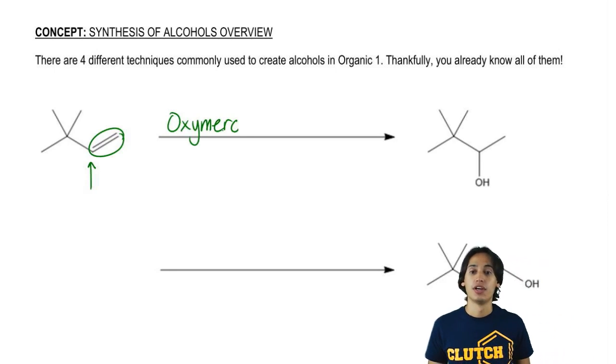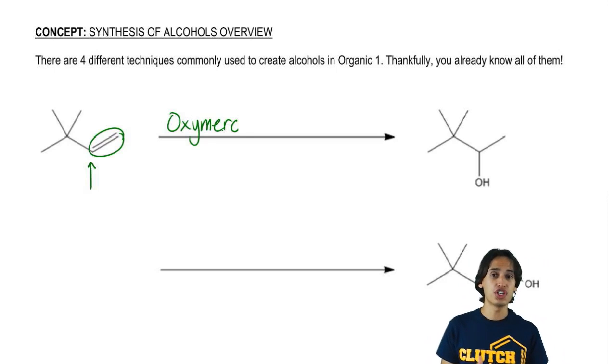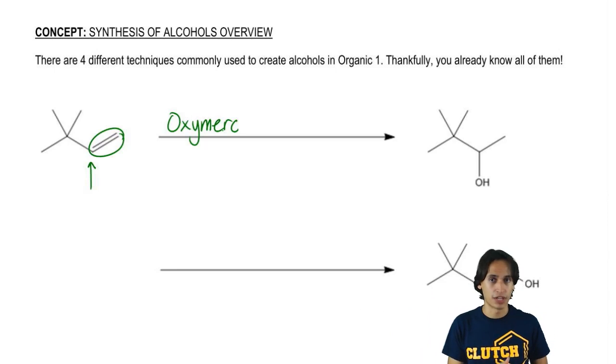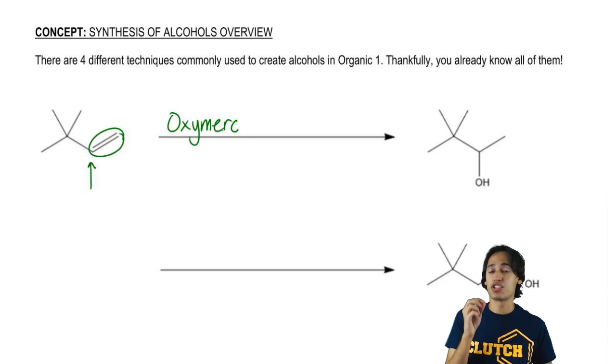Why is that? Because if you remember, oxymercuration is an addition reaction that adds Markovnikov alcohol, which is good because that is the Markovnikov or more substituted location. But there's another thing that's special about oxymerc, which is that there's no carbocation in the intermediate.